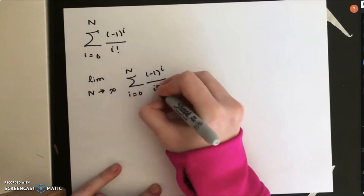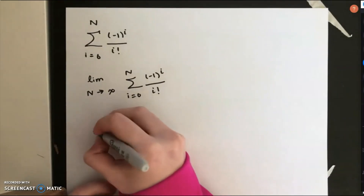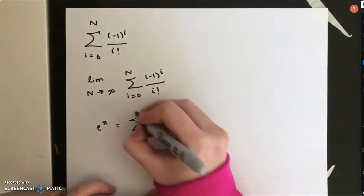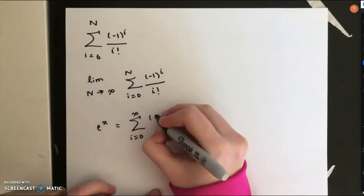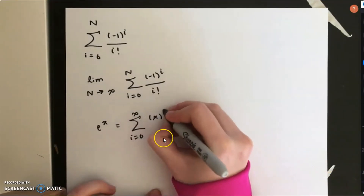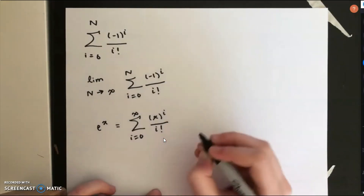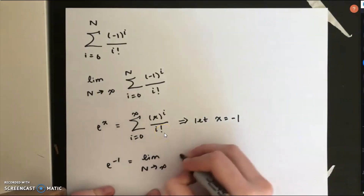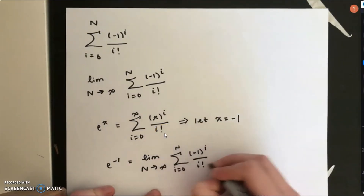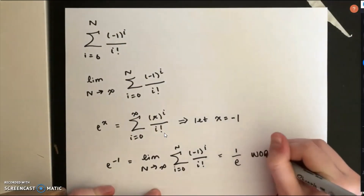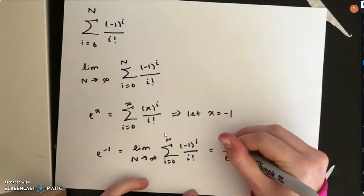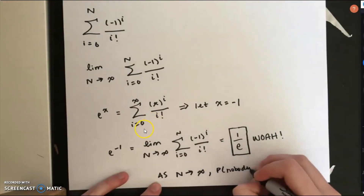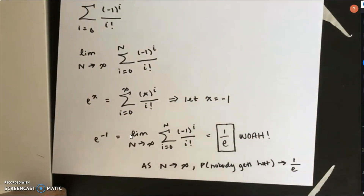Finally, something interesting happens when N grows towards infinity. The Taylor expansion of e to the x is the sum from i equals 0 to infinity of x^i over i factorial. If we let x equal negative 1, this becomes the exact same formula. So as N grows towards infinity, the probability that nobody gets their own hat converges to 1 over e, which is a super cool and interesting result.